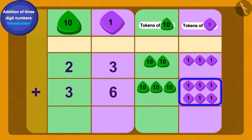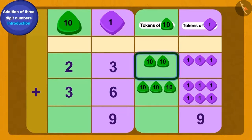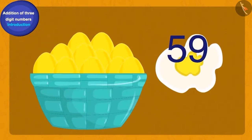We will first add the ones tokens. Add 6 ones to 3 ones and we get 9 ones. Now if we add 2 tens tokens and 3 tens tokens, how many do we get? Perfect! 5 tens tokens. Thus Baban had a total of 59 gold eggs.